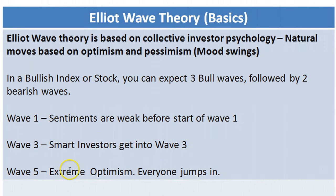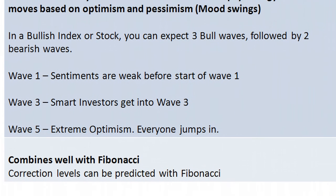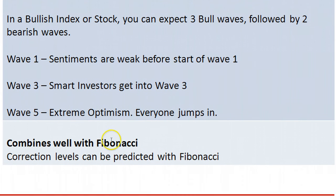Wave 5 is when people are extremely bullish and everybody jumps into the market. The 2006 to 2008 rally was considered to be Wave 5 where everybody jumped into the stock market. You can normally combine Fibonacci with Elliott Wave Theory to find out which levels it will correct back to — you can watch the separate Fibonacci video for more details. Let's now move on to the chart.